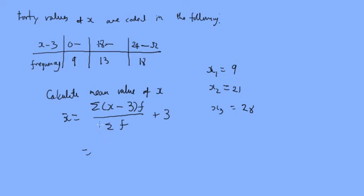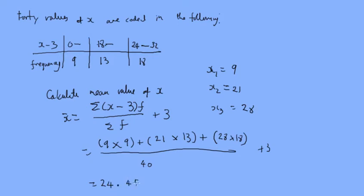So we have the sum of x minus 3 for this first one is 9 times the frequency, which is 9. Then we add the next one: the midpoint is 21 times the frequency 13. Add the midpoint 28 times the frequency 18. Then we multiply all that by 40, and then we'll be adding 3 on at the end. So that's 24.45.